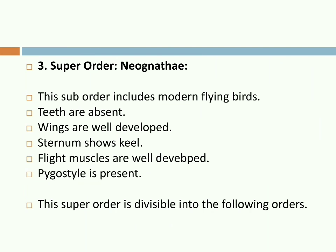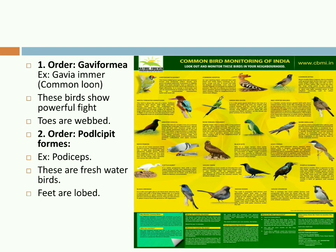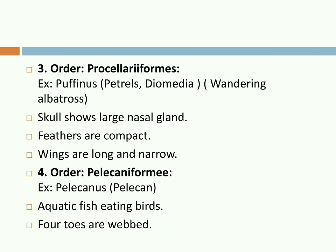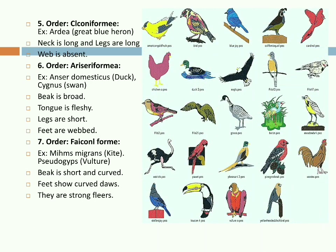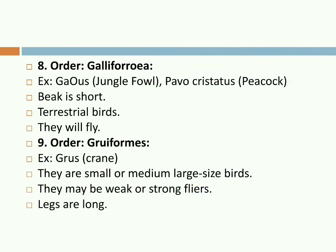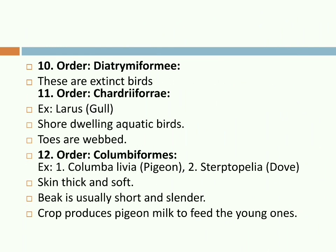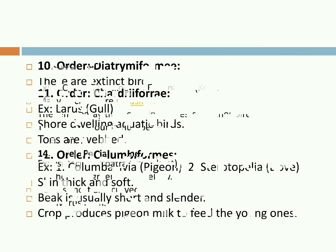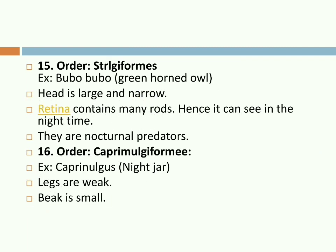The super-order Neognathae includes modern flying birds. Teeth are absent. Wings are well-developed. Sternum shows a keel. Flight muscles are well-developed. Pygostyle is present. This super-order is divided into about 23 orders, including: Columbiformes, Podicipediformes, Procellariiformes, Pelecaniformes, Ciconiiformes, Anseriformes, Phoenicopteriformes, Falconiformes, Galliformes, Opisthocomiformes, Gruiformes, Charadriiformes, Cuculiformes, Coraciiformes, Piciformes, Cetaciiformes, Caprimulgiformes, Strigiformes, Micropodiformes, Trogoniformes, Columbiformes, Coraciiformes, and Passeriformes.